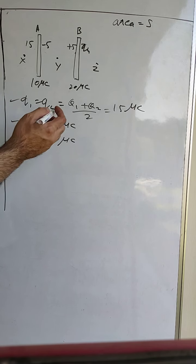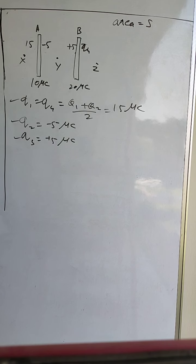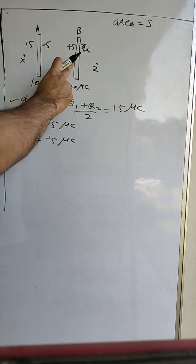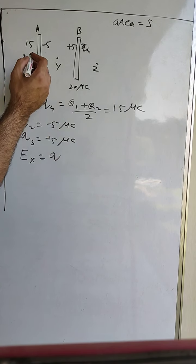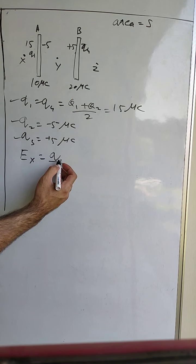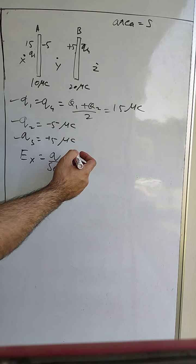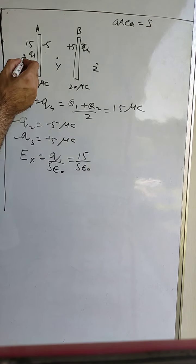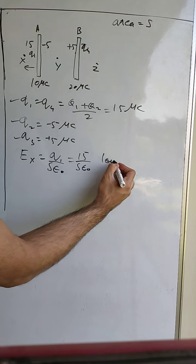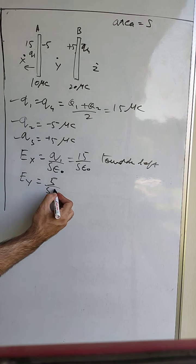Now for the electric field at points x, y, and z. At point x, on the left side of plate A, the charge is q1, so Ex = q1 / (S·ε₀) = 15 / (S·ε₀), directed towards the left since it is a positive charge. Similarly, Ey = 5 / (S·ε₀) since the relevant charge is 5 microcoulombs.